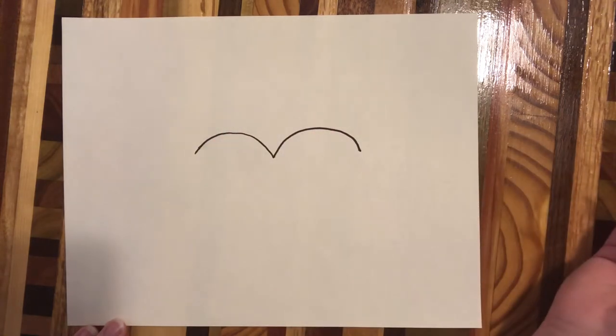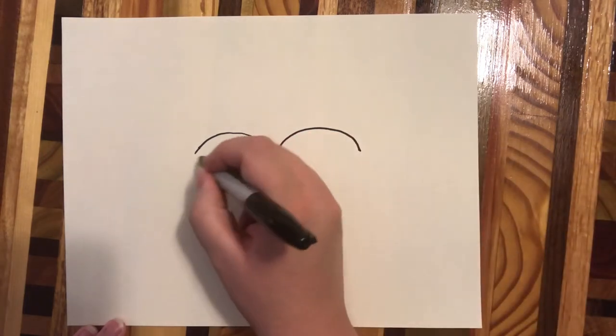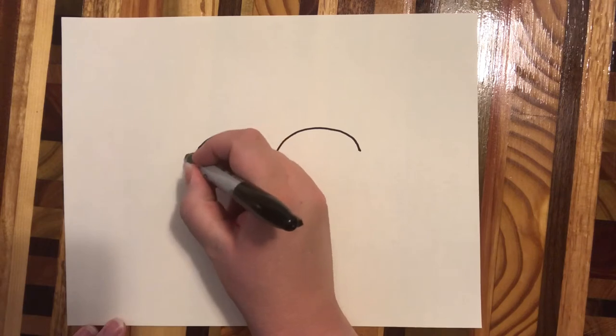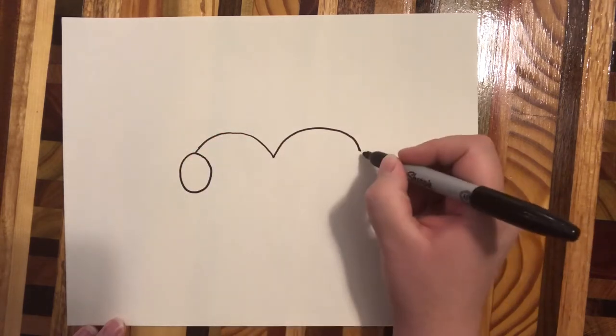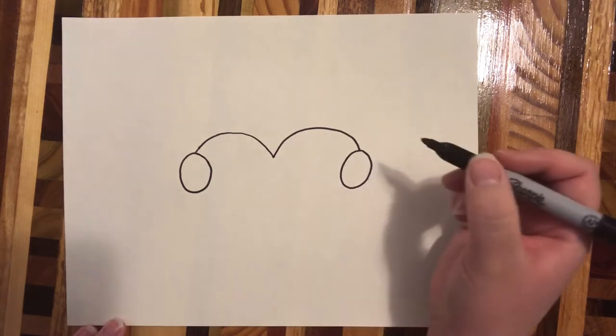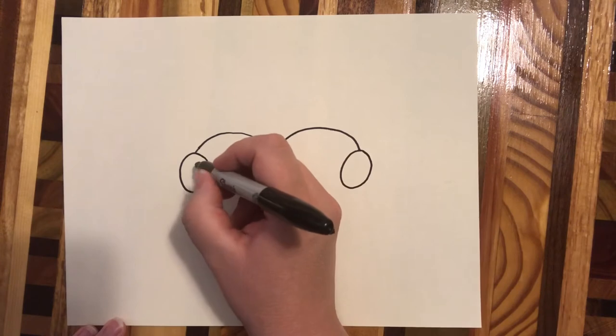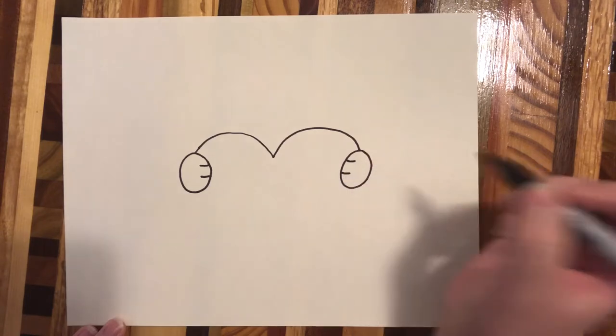Next step, I'm going to make the bear's paws holding on to the heart. So I'm going to go circle here, circle here, and I'm going to draw some little lines for the bear's little paws.